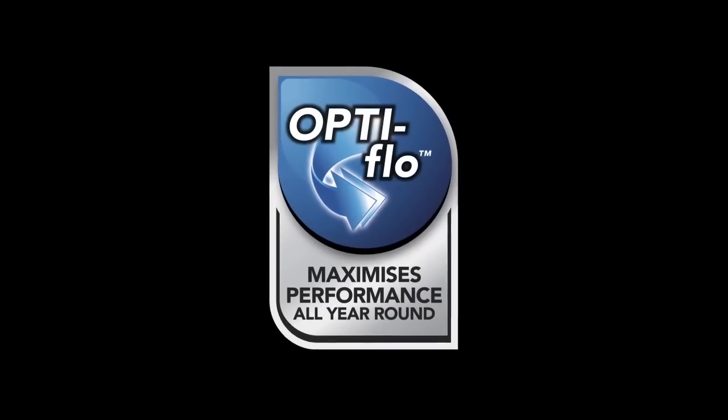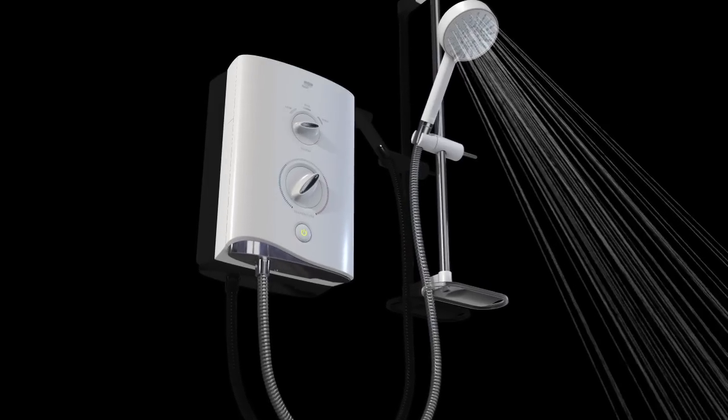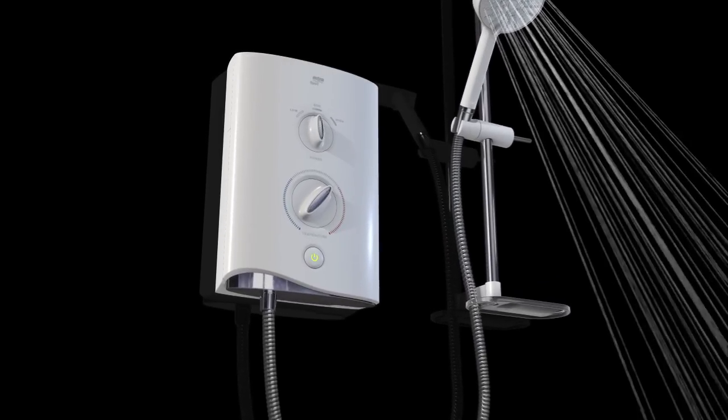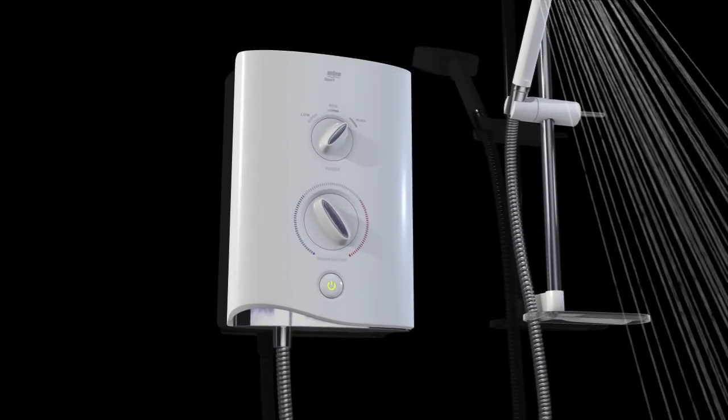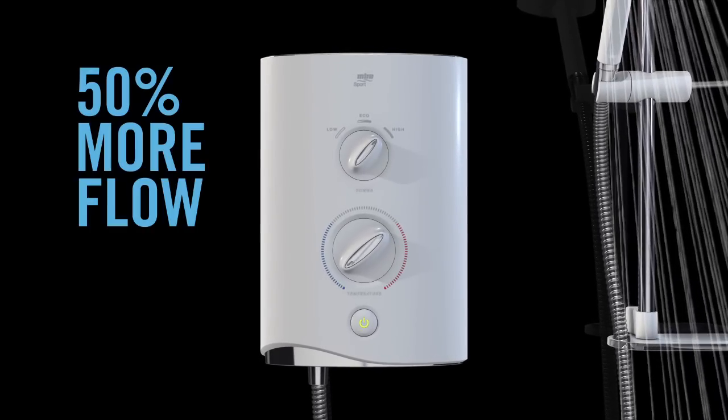OptiFlow from Myra deals with this problem. It lets the user keep the power high and still adjust the temperature control, which means the shower gives up to 50% more flow than other electric showers in the warmer summer months.